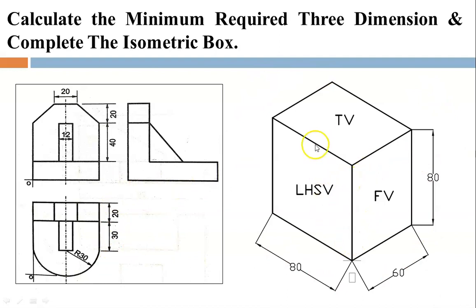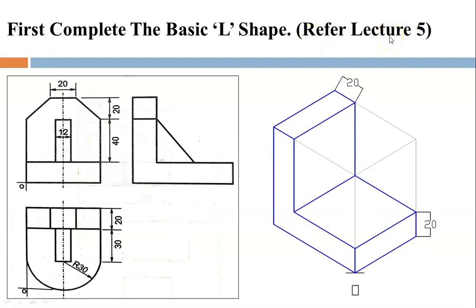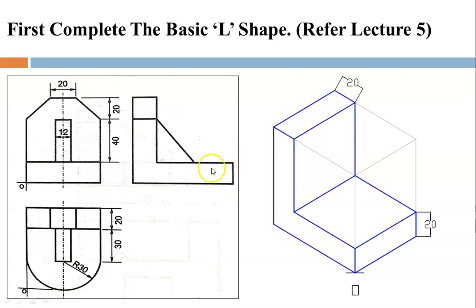Using these dimensions, complete the isometric box. In lecture number 5 we already covered the L shape. When looking at the question with multiple features, always find the basic shape you can draw first. Considering the three views — front, top, and side — I can see the base shape is the L part. We discussed this in lecture number 5. Using these dimensions: height 80, base 80, and thickness 20 mm, complete the L shape. Refer to lecture number 5 to complete the L shape.